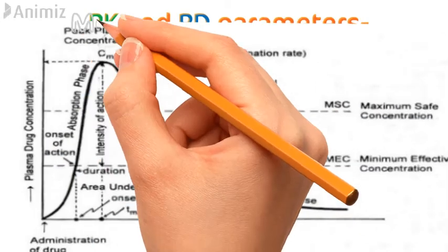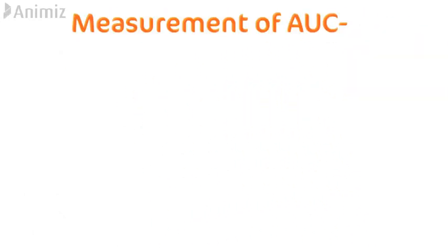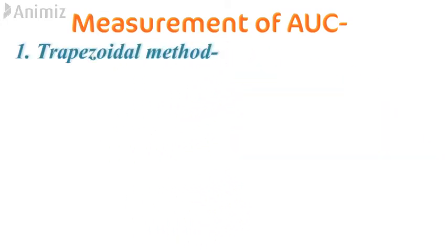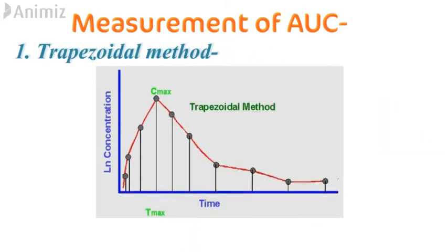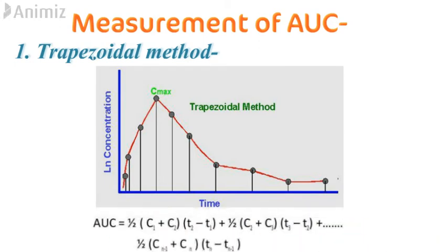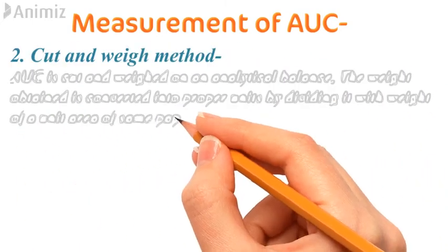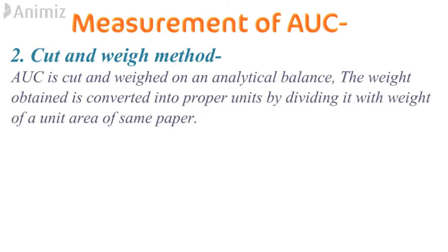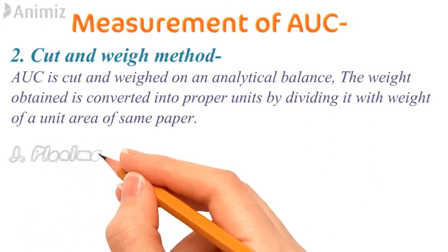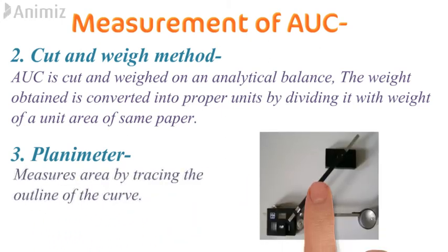Cmax, Tmax and other parameters are read directly from the graph, but there are different methods for measuring the area under the curve. For example, the trapezoidal method divides the AUC into many trapezoids and combines their areas to find the total AUC. The cut and weigh method involves cutting out the AUC and weighing it on an analytical balance; the weight is then converted to proper units by dividing by the weight of a unit area of the same paper. The AUC can also be measured using a planimeter, which measures the area by tracing the outline of the curve.